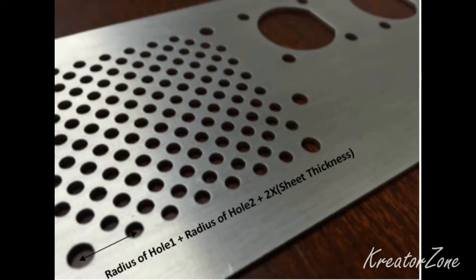Minimum center to center hole distance is maintained to avoid metal distortion, deformation and fracturing. Minimum distance between two holes center during sheet metal design should be equal to sum of hole radius plus two times the sheet thickness.